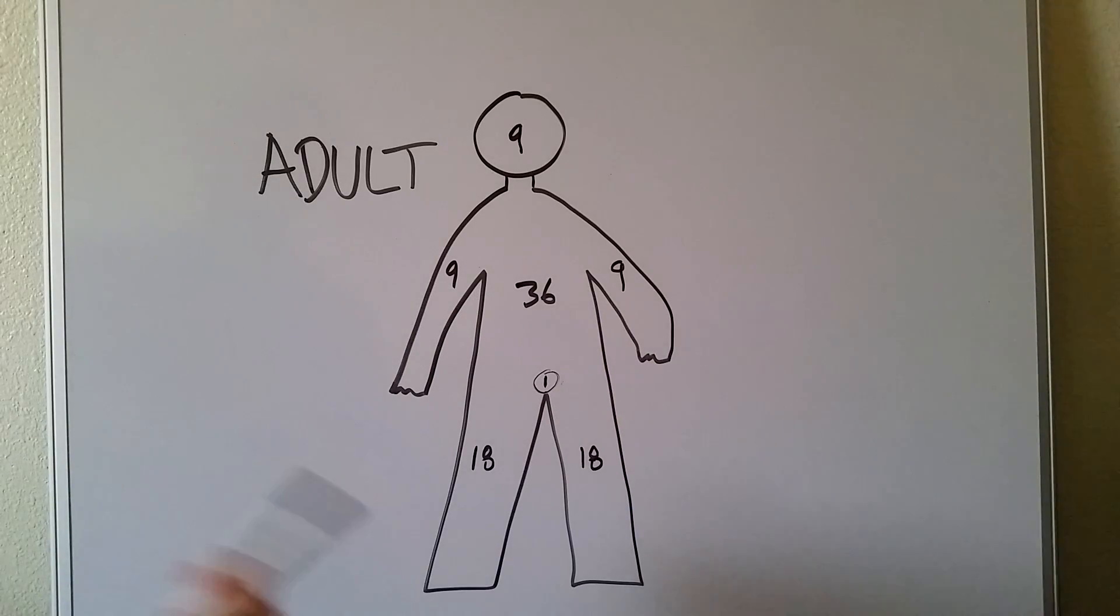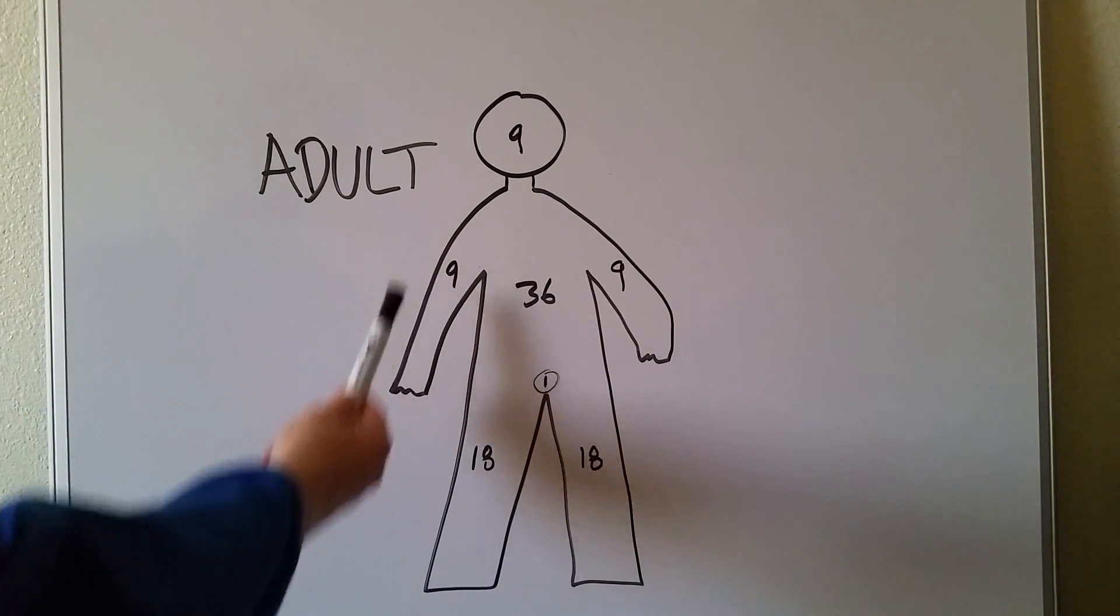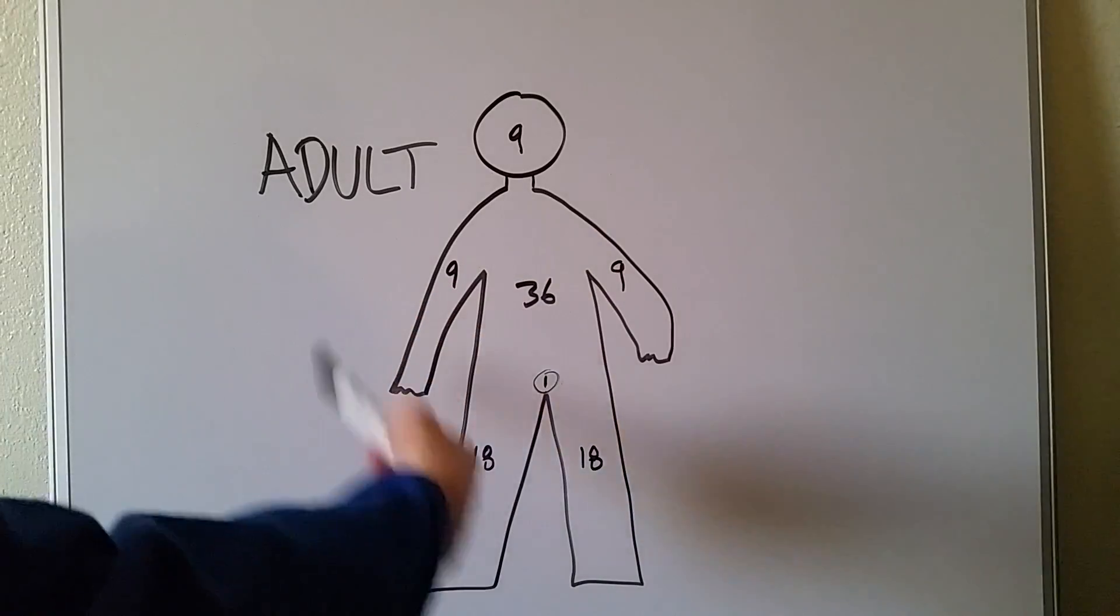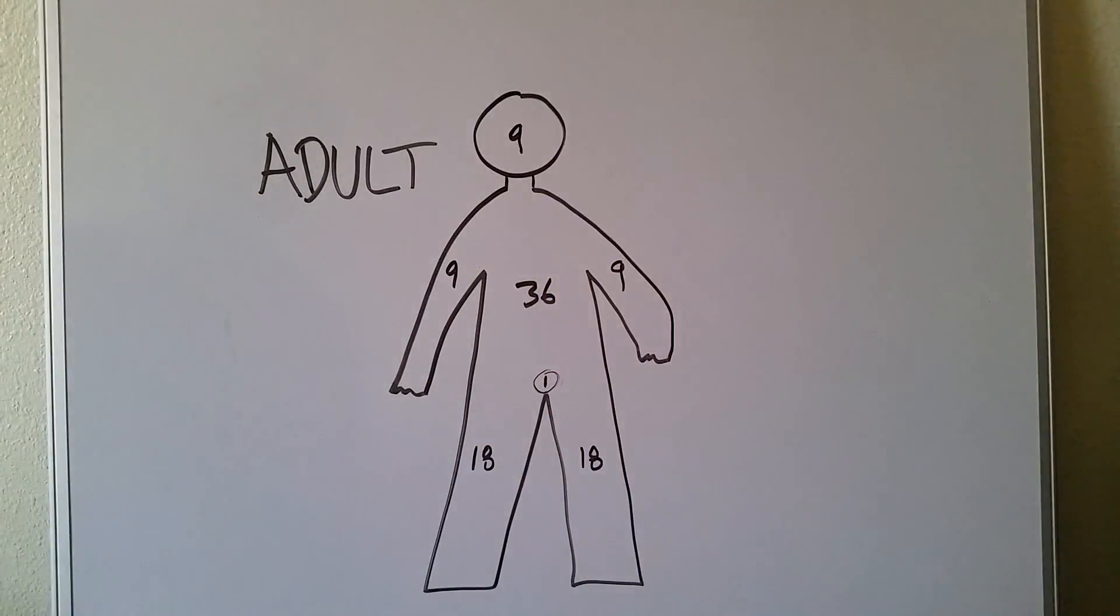Now what's bigger, a torso or a leg? Well a torso is. So we're just moving up from smallest to biggest here. So arms, nine times two is 18, times two is 36 and if you need to subtract, well the only thing left is nine for the head. It's just nine, 18, 36, rule of nines, right?